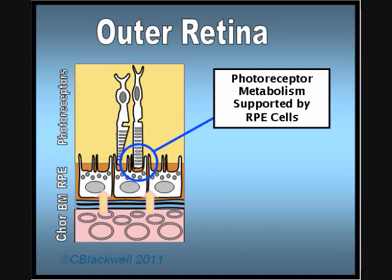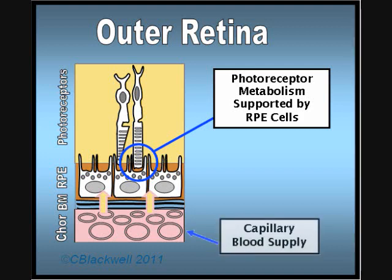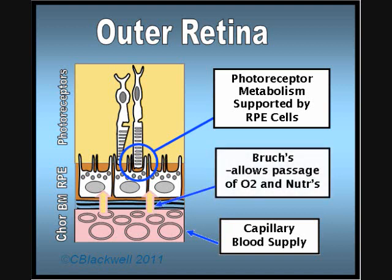The RPE cells are very important because they support the metabolism of the rods and cones. The blood vessels that supply oxygen and nutrients to the lower half of the retina are located in a layer called the choroid. Separating the retina and choroid blood vessels is a barrier layer called Bruch's membrane. It separates the cell layers while allowing oxygen and nutrients to pass through to the retina. Changes in this bottom layer of the retina are responsible for what happens with aging and macular degeneration.